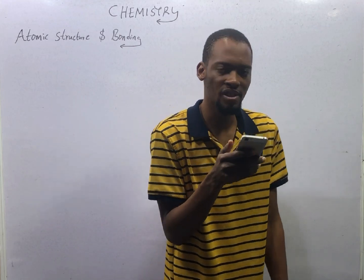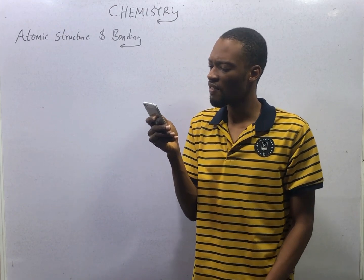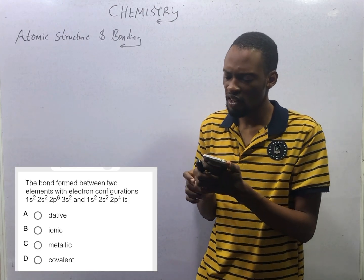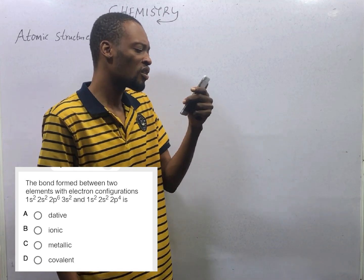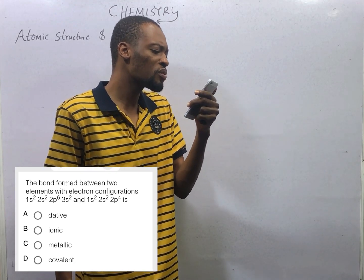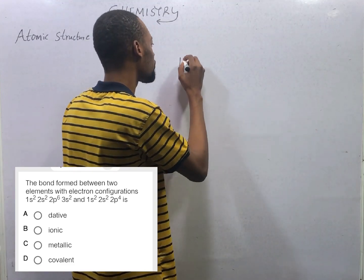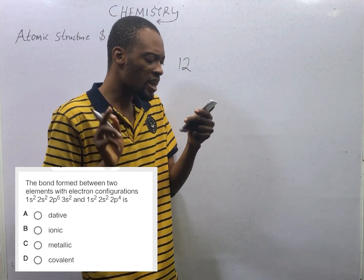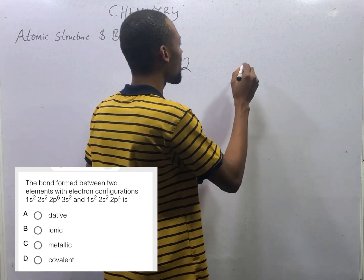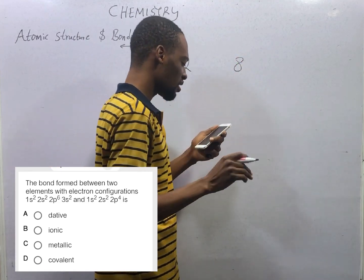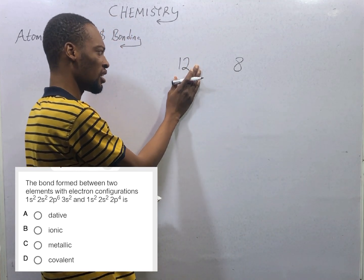The bond between two elements with electron configurations as shown on the screen is what type? If we count the electrons in the first one, we have 2 + 2 + 6 = 10, plus 2 = 12. The second one has 2 + 2 + 4 = 8. So the first element has 12 electrons in total and the second has 8 electrons in total.